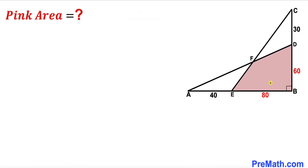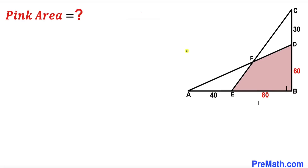Welcome to pre-math. In this video we have two right triangles, triangle ABD and triangle BCE, put together as shown in the diagram. As a result we get a pink shaded quadrilateral EBDF such that segment AE is 40 units, segment EB is 80 units, segment CD is 30 units, and segment BD is 60 units. Our task is to calculate the area of this pink shaded region.